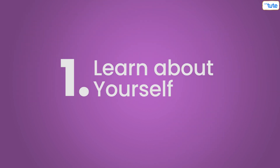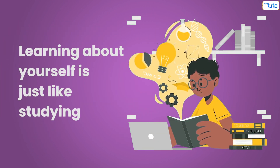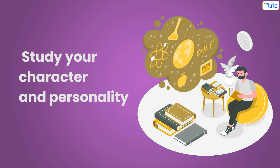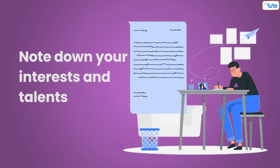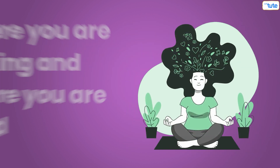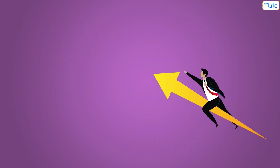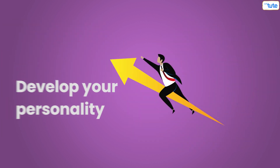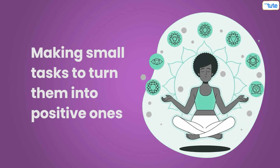Tip number 1: Learn about yourself. Learning about yourself is just like studying, but this time study your character and personality. Take a book and note down your interests and talents, because it will help you to understand where you are lacking and where you are good at. It is the first step you need to take to develop your personality. After knowing your negative and weak points, try working on them by making small tasks to turn them into positive ones.